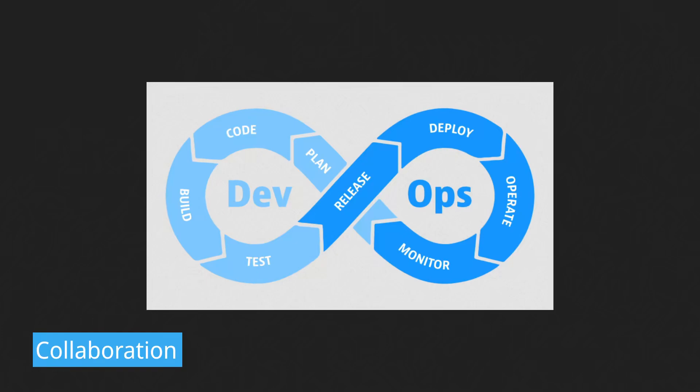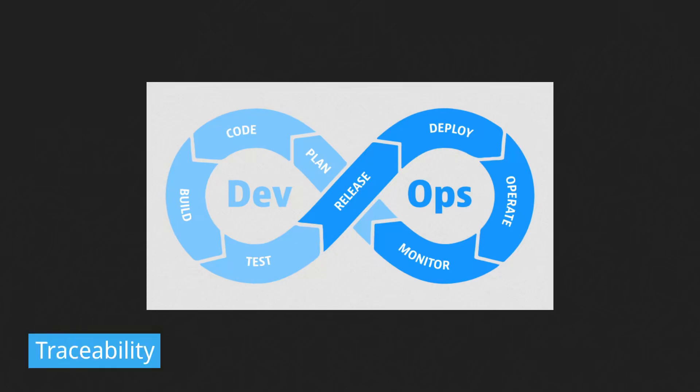Having a good DevOps pipeline setup also promotes collaboration among team members, as it clearly defines the roles and responsibilities of each team member and how they fit into the process. This improves teamwork, efficiency, and communication, resulting in more efficient and effective development and deployment.